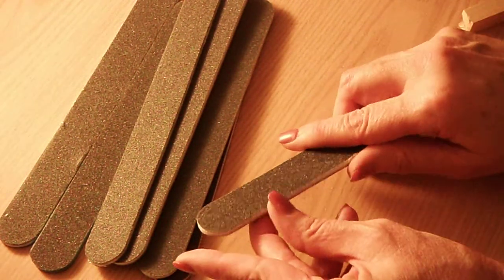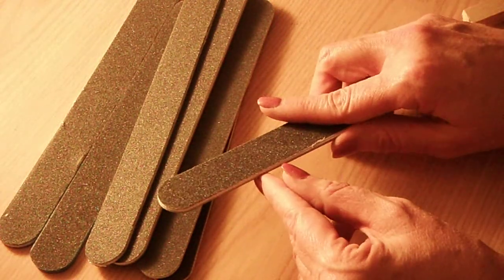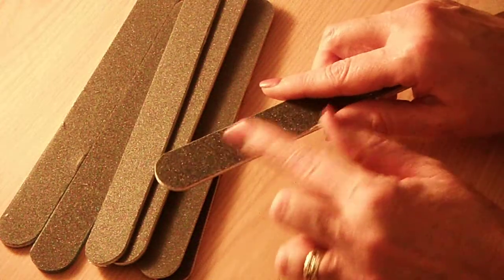These are great little sanders. They're like the black emery boards that you can get at the drugstore that they use for acrylic nails and that sort of thing.